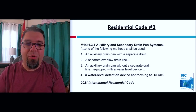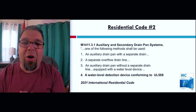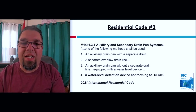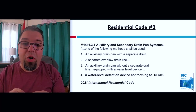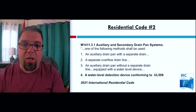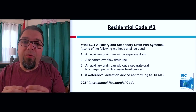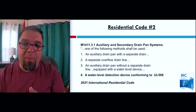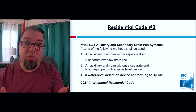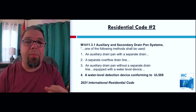Residential code number two that you need to know about heat pumps is about auxiliary and secondary drain pan systems. In the IRC, dating all the way back, this is nothing new — you have to have one of four following methods. The first one doesn't apply to ductless heat pumps: you need to have an auxiliary drain pan with a separate drain, which is great for ducted heat pumps especially when installed over conditioned space like in an attic.